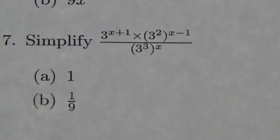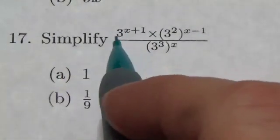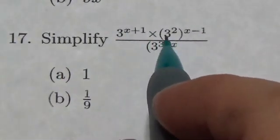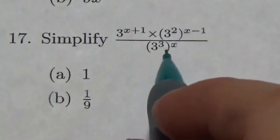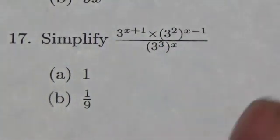Okay, everybody, let's take a quick look at this question right here. Notice I've got 3 to the x plus 1 multiplied by 3 squared to the x minus 1 divided by 3 cubed to the x.